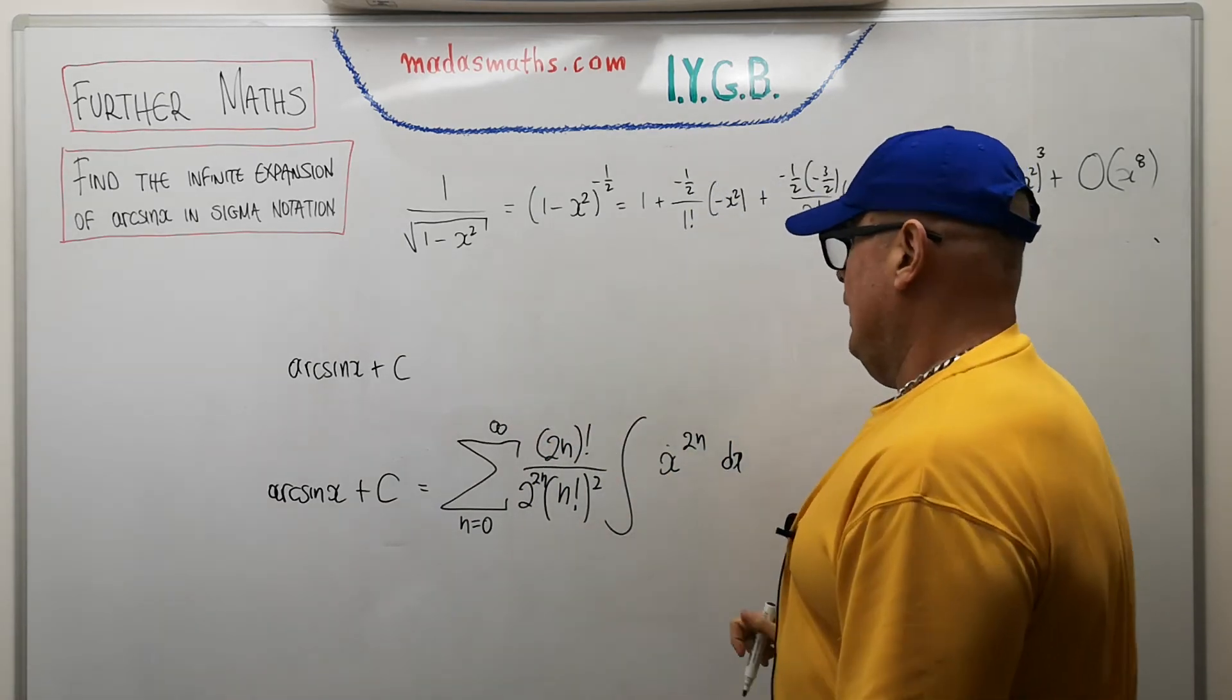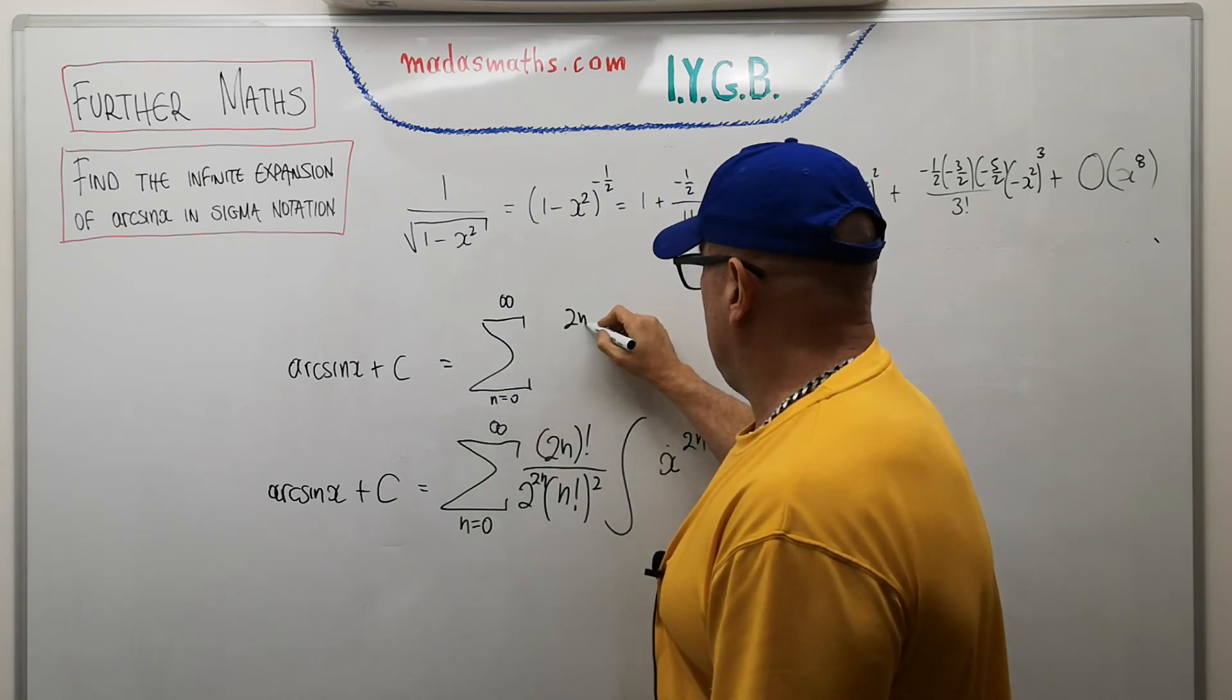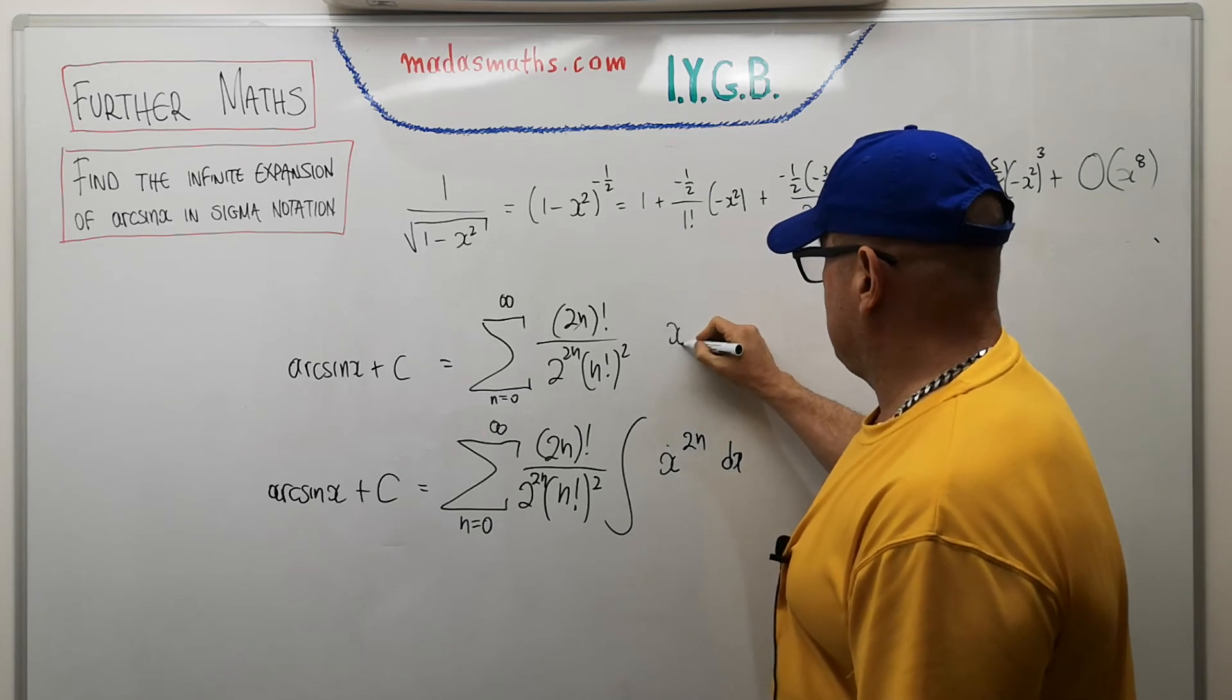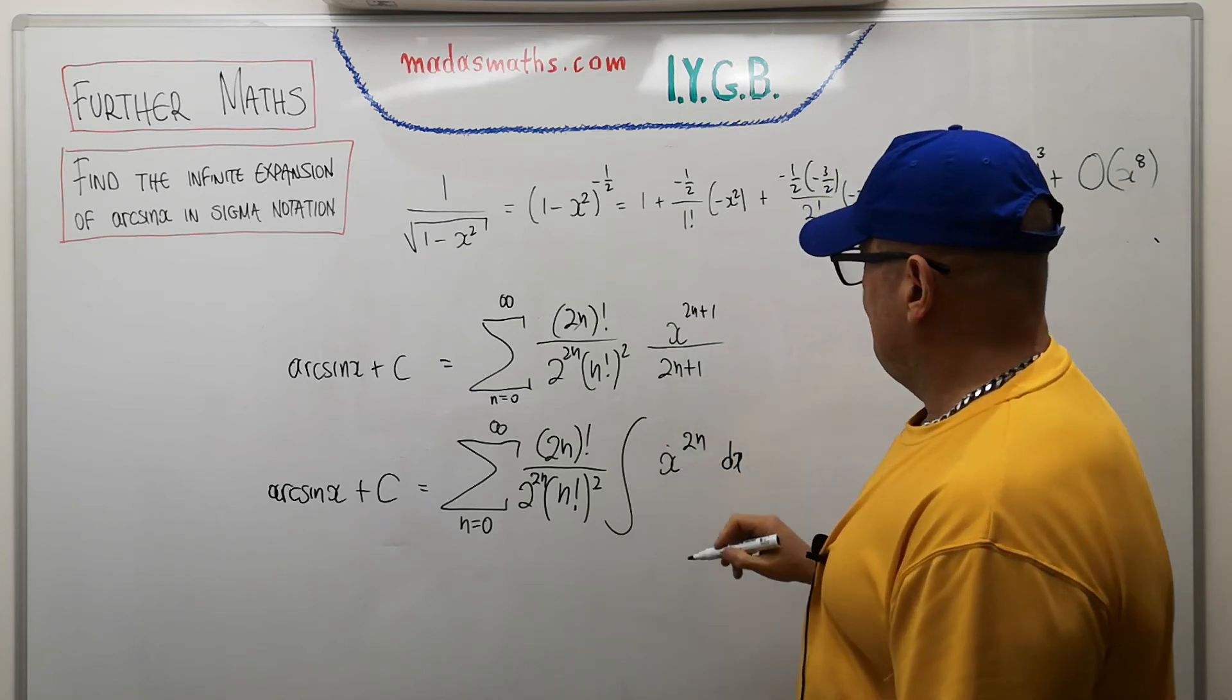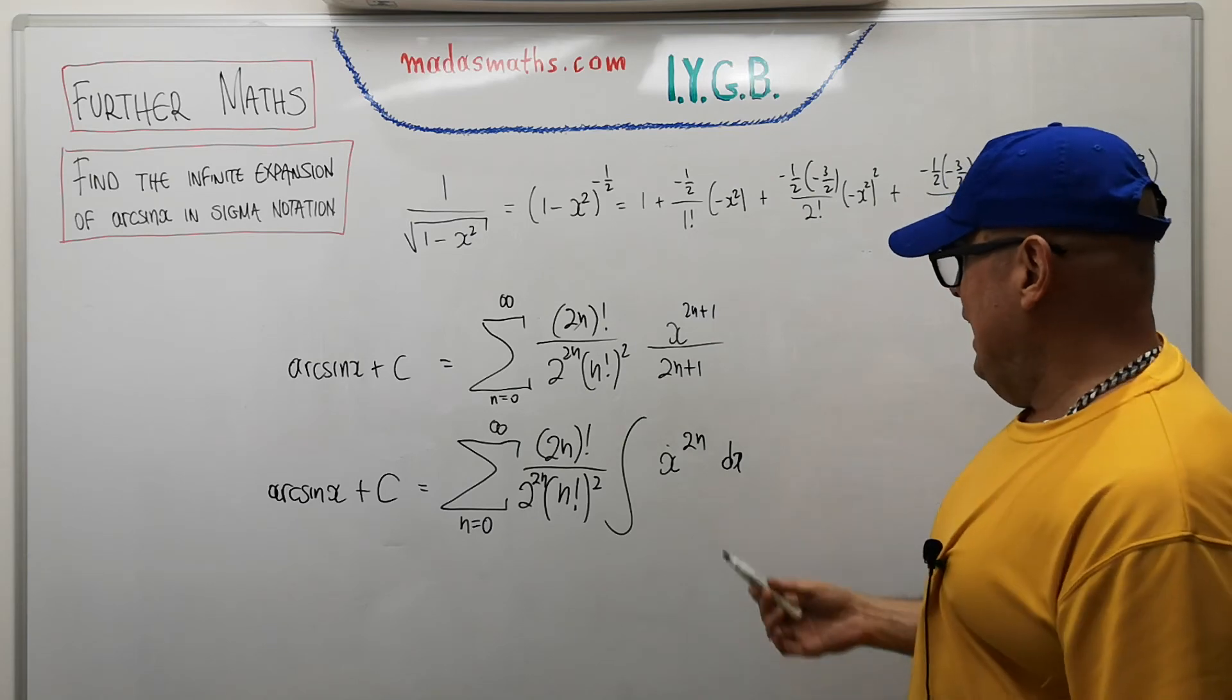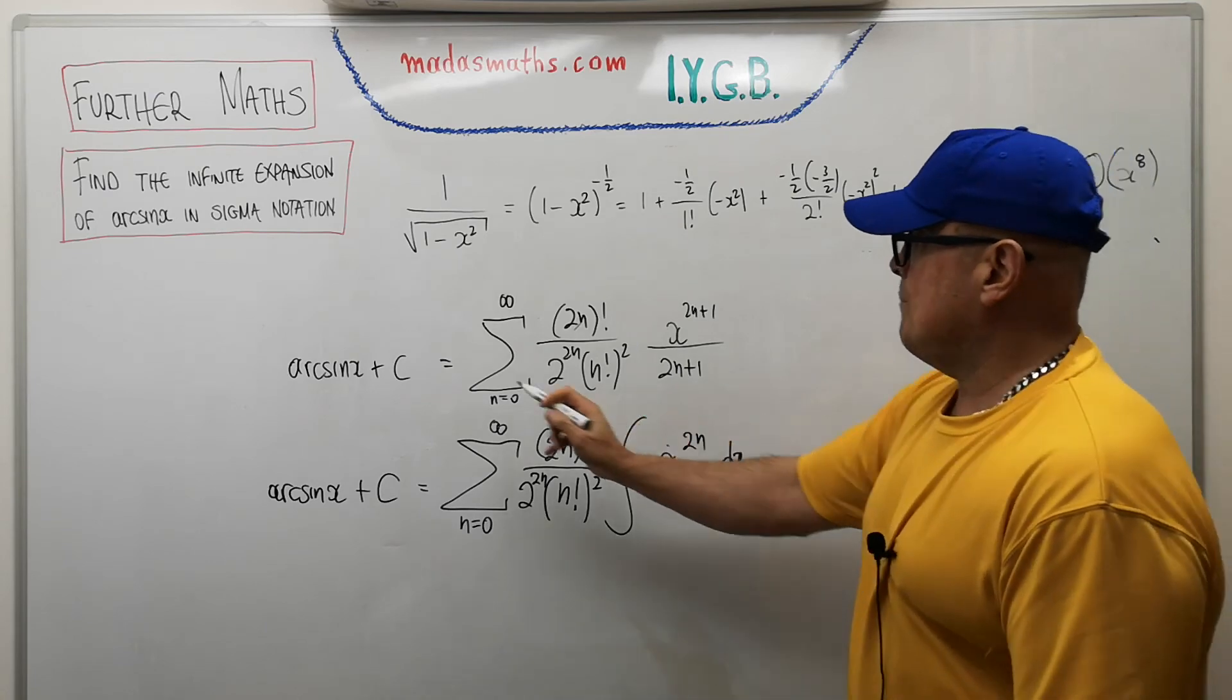So the left-hand side of that will now give us the arcsin of x plus the arbitrary constant of the integration, which, of course, we need to evaluate at this stage, is equal to the sigma with all of this mess. n is equal to 0, 2n factorial, over 2 to the power of 2n, n factorial squared. And, of course, I'm going to integrate that. And this will be x, increase the power by 1, to the 2n plus 1, divided by the new power. And, of course, there's going to be loads and loads of constants. Because, don't forget, this is not one item. It's for every value of n, there's an integral to be done. So all these constants that we're going to get from the integration, we're going to sum them into here. So I'm not going to put anything on this particular side.